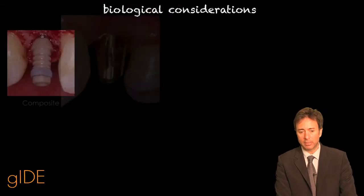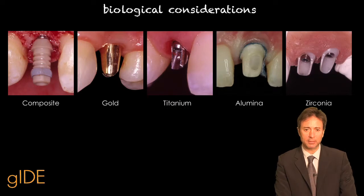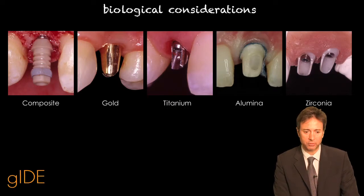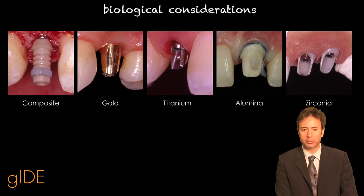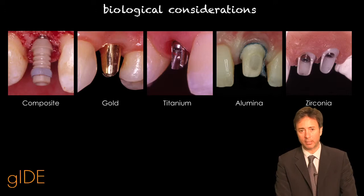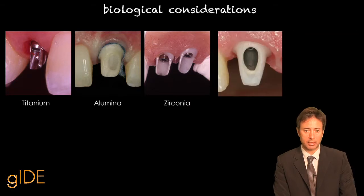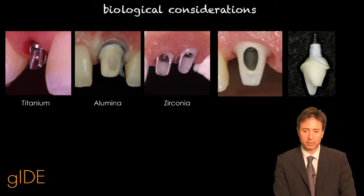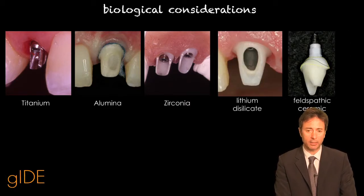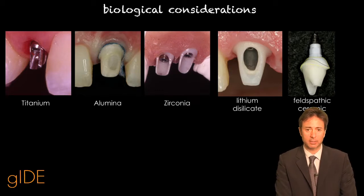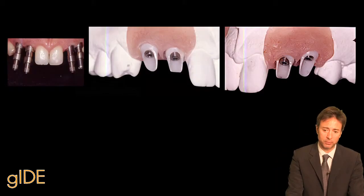We have so many materials that come in contact with soft tissue. We have composite, gold, titanium, alumina, zirconia, and now in the last two to three years we are using two new materials: lithium disilicate and even feldspathic ceramics. These are the materials coming in contact with soft tissue.